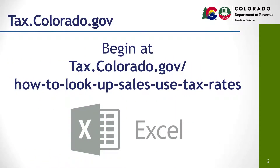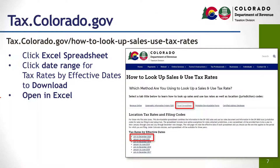Let's get started. Begin by going to tax.colorado.gov/how-to-look-up-sales-use-tax-rates. Once you are on the How to Look Up Sales and Use Tax Rates website, click on the header Excel Spreadsheet. Under the Tax Rates by Effective Dates section, click on the hyperlink for the time period you are looking up. This will download the Excel file to your computer. Once the file has finished downloading, open it in Excel.